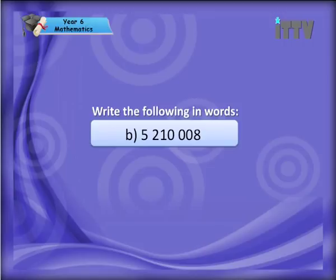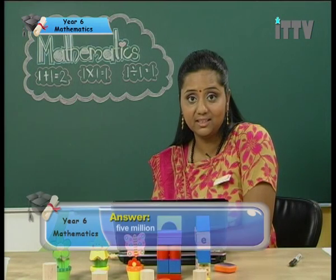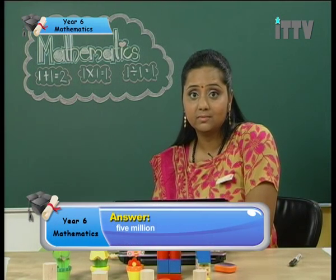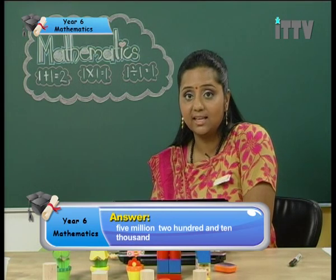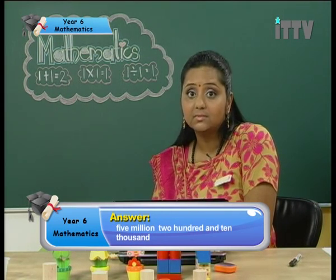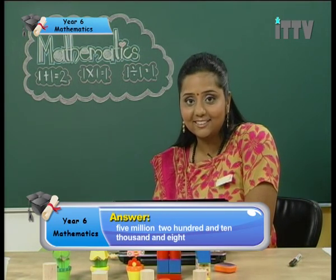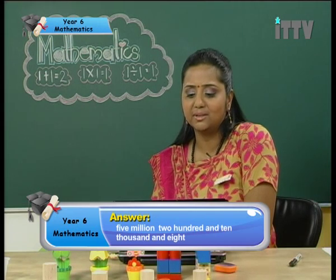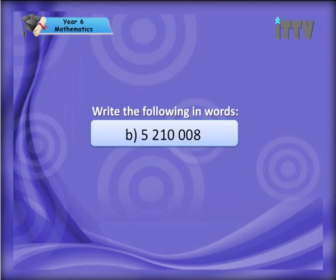Let's try another one. You have the number five million two hundred and ten thousand and eight. Let's write it down: five million, two hundred and ten thousand, and eight. It's a much shorter one. Did you get that?